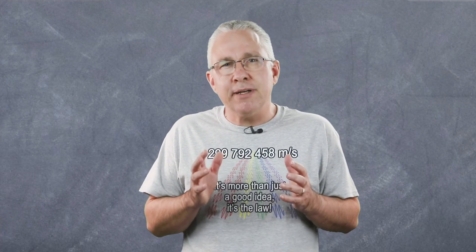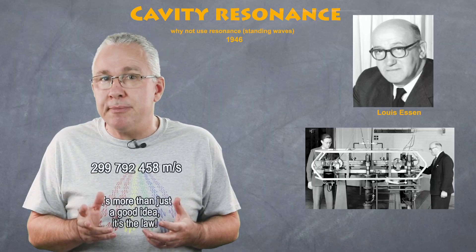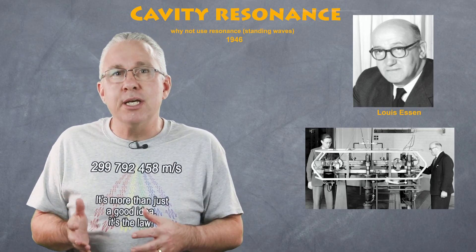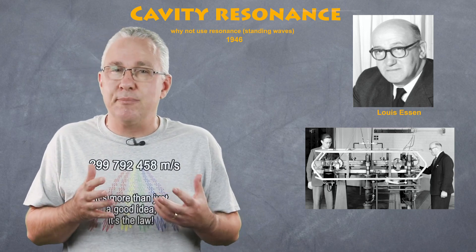We've demonstrated how you can determine the speed of light using a microwave and something that melts — in this case chocolate, but you can also use cheese or marshmallows. In fact, this experiment models an experiment done by Lewis Essen in the late 40s and early 50s to determine the most precise value for the speed of light. During World War II, the development of radar required a more precise value than the one Michelson had determined in the early 30s, so Essen developed an experiment using a microwave cavity and standing waves.